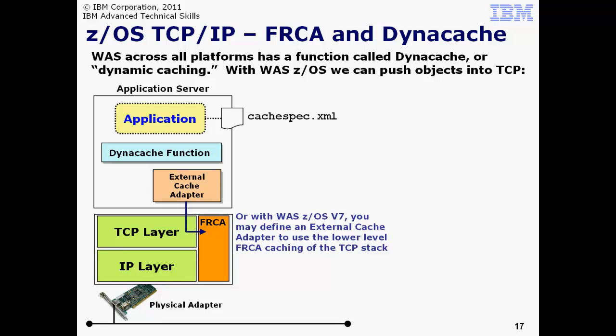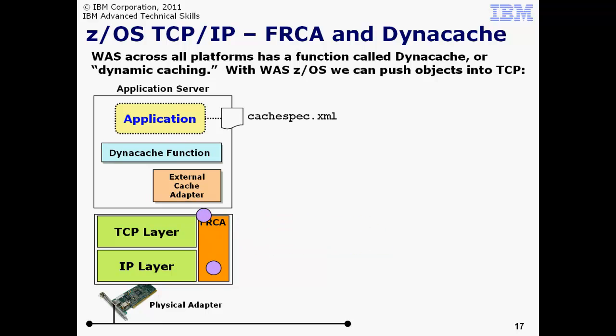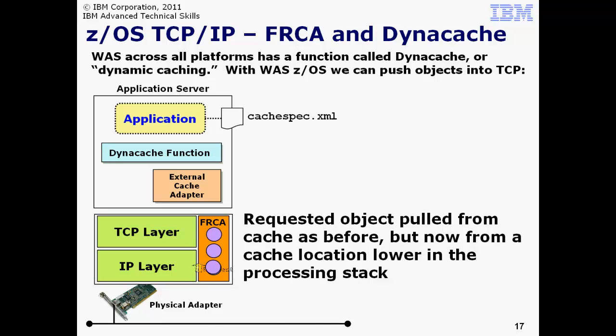On WAS z/OS, we've introduced the ability to specify the z/OS TCP FRCA function as an external cache location. The FRCA function on z/OS is part of the TCP/IP stack. Imagine the application is requesting that objects be cached using Dynacache, but in this case we've configured an external cache adapter and specified the z/OS FRCA function. Now cached objects go to FRCA. And when a request comes in for that cached object, it's served out of the TCP stack. That means even less processing is required to serve out that cached object. FRCA is a very efficient caching mechanism and has the potential to increase throughput and reduce CPU consumption, because it is operating at a lower point in the functional stack than the application up in WAS itself.